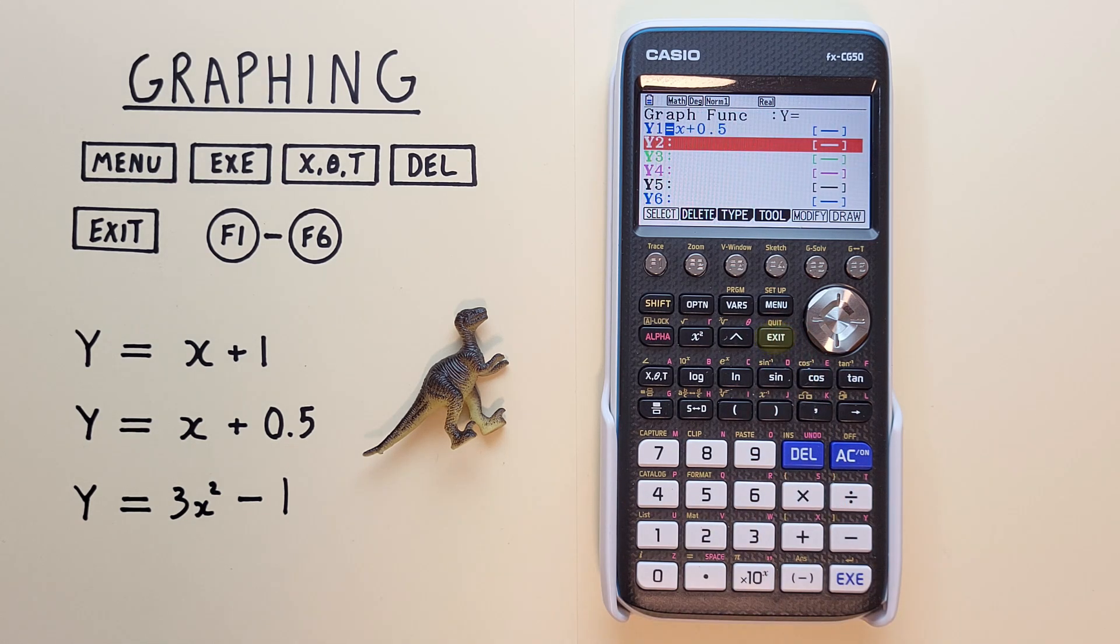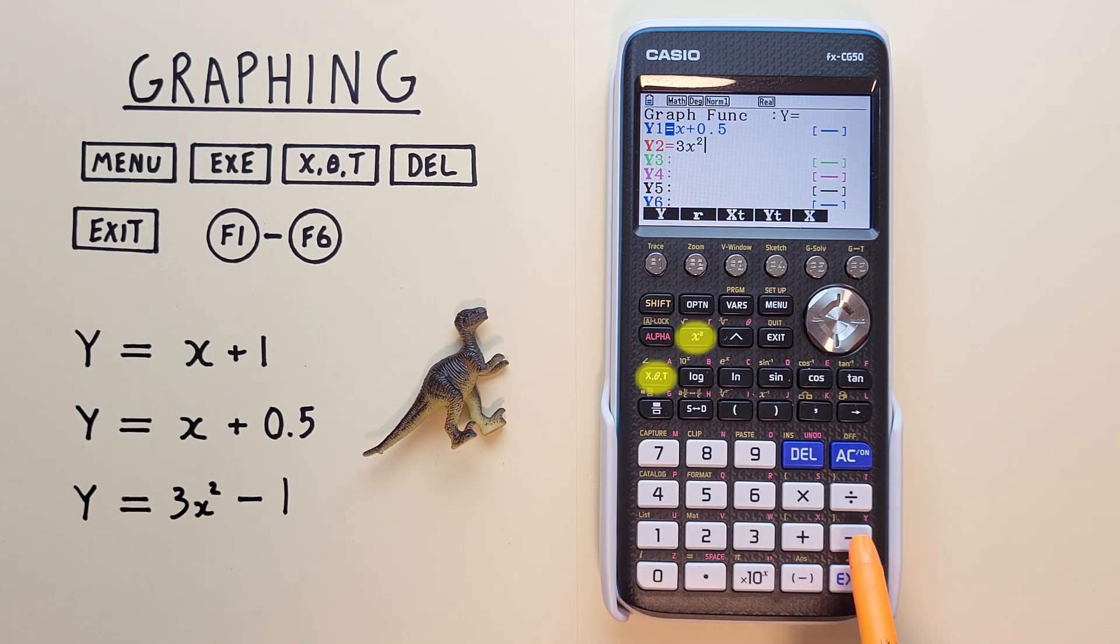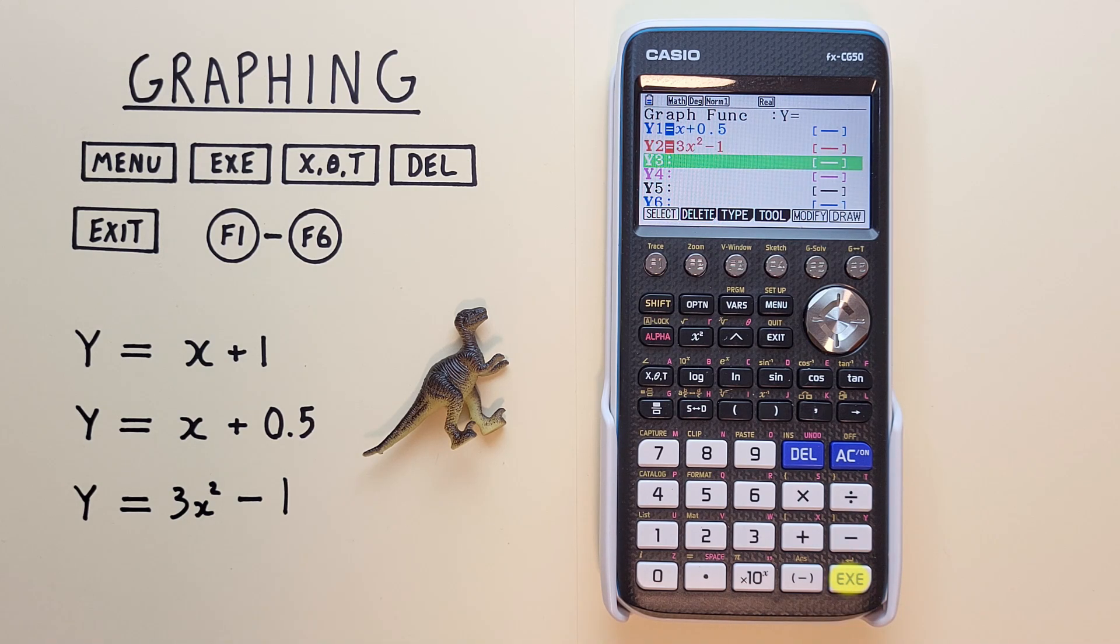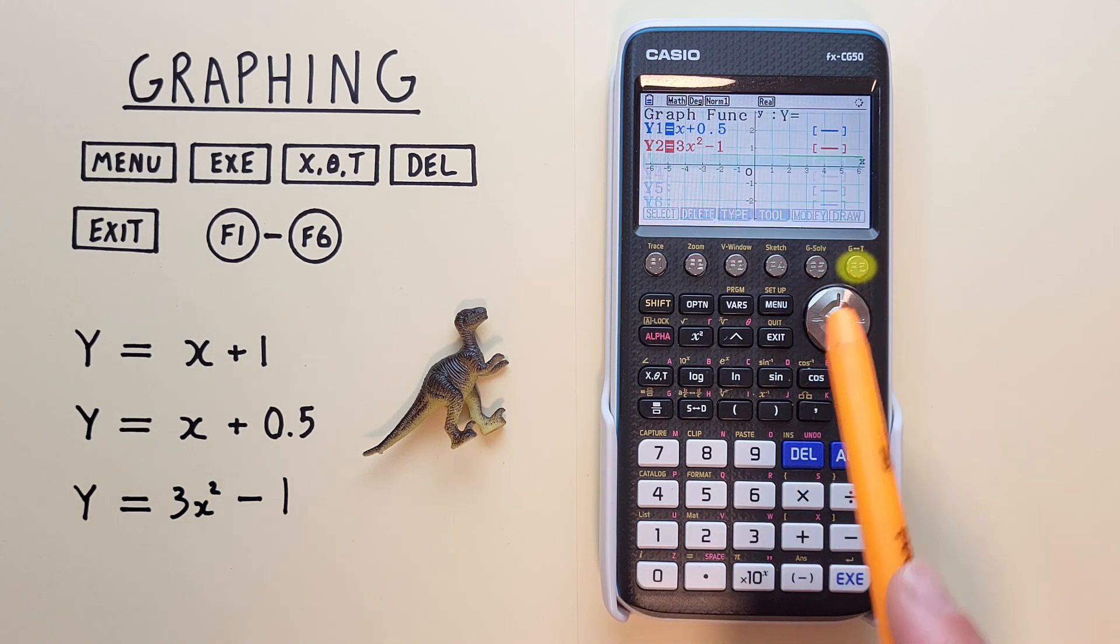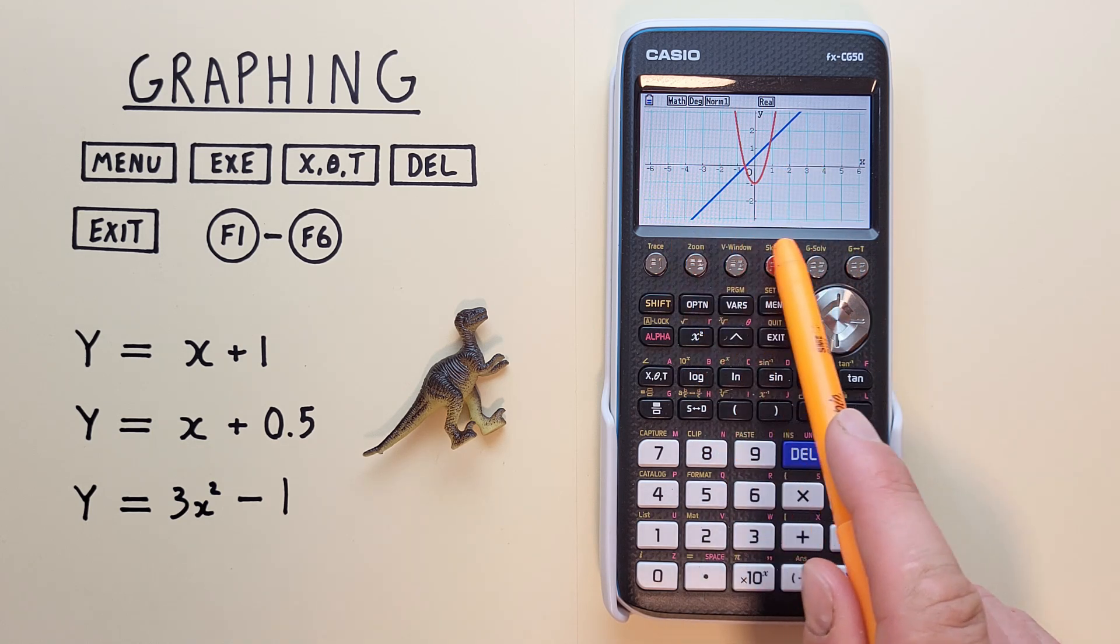Let's add a second function now. Let's go Y equals 3x squared minus 1. And draw. And there we go. There's both our functions on our graph.